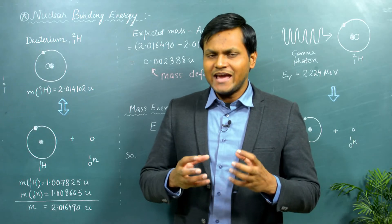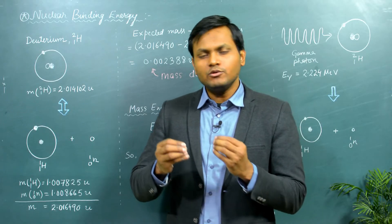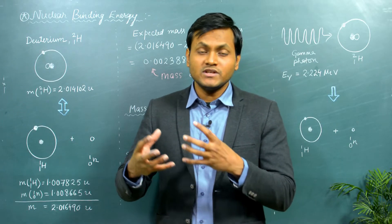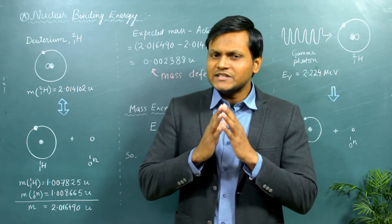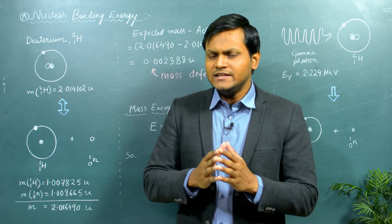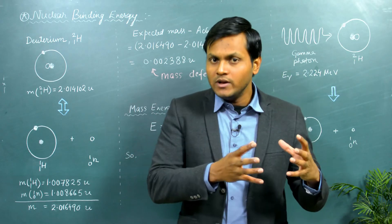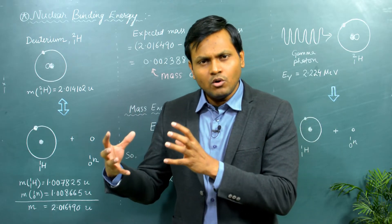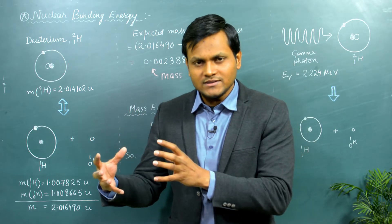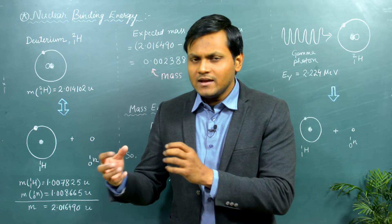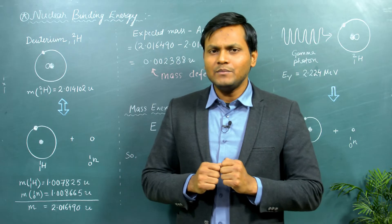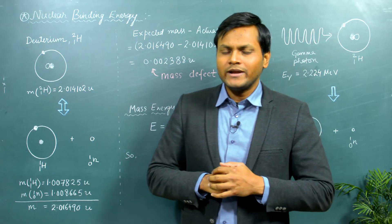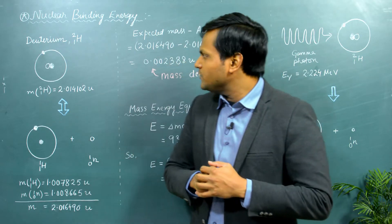If you take a nucleus and break it apart into its constituent particles like neutrons and protons, you'd probably expect that the mass of the nucleus should be equal to the mass of all its constituent particles. But that's not what happens. To illustrate this point, let's take a very specific example.